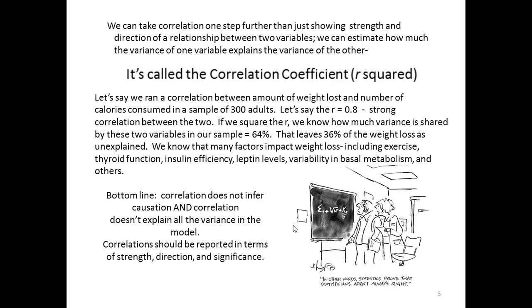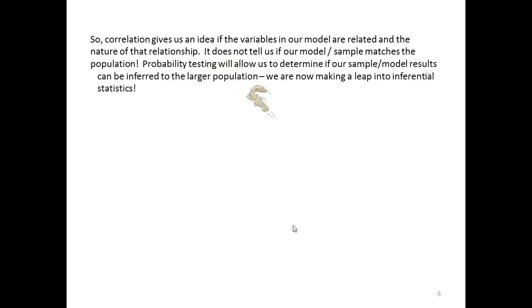Correlations, as I mentioned earlier, should always be reported in terms of strength, direction, and significance. So correlation gives us an idea if the variables in our model are related and the nature of that relationship. But it won't tell us if our model or our sample matches the whole population. Probability testing will allow us to determine if our sample results can be inferred to the larger population. We are now making that leap into inferential statistics.